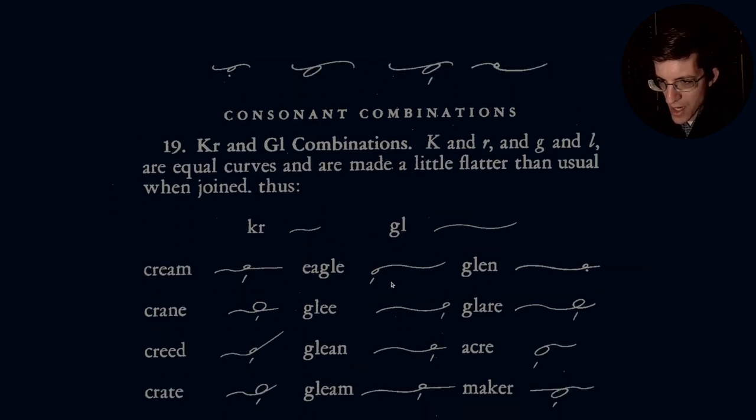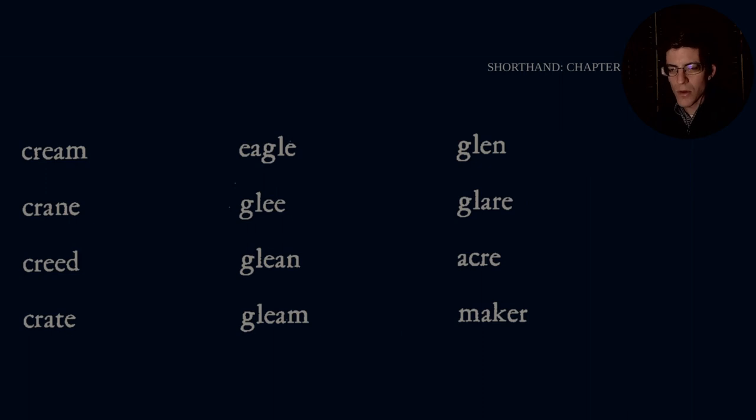Moving on to our next group, which is 19, Kr and Gl groups. K and R and G and L are equal curves and are made a little flatter than usual when joined thus. You can see it's not quite as broad of a sweep as we've used in the past. And same for Gl. Cream, so Kr is the section that's going to be a little bit flatter than usual. So Kr, eem. Like that. And then crane.